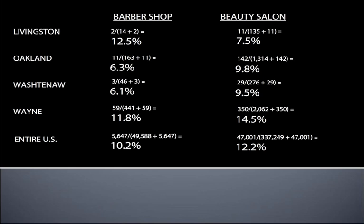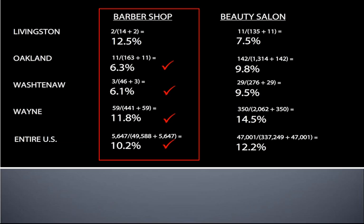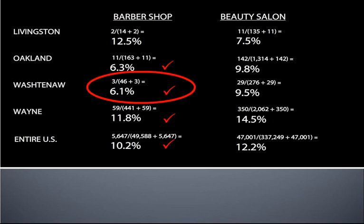Let's take a look at the numbers we have here and place a check mark where the percentages are lower in that particular row, indicating that failures were lower in that type of business than in the other. In nearly all of the counties as well as the entire United States, barbershops have a lower chance of failure — hence a lower risk — than beauty salons. If we were to choose a particular county to open up our barbershop, it makes sense to choose the geography with the lowest failure rate, which would be Washtenaw County, since only 6.1% of the barbershops opened there since the year 2000 went out of business. This is over 4 percentage points lower than the national average of 10.2%. If we were still set on opening up a beauty salon, our best choice would be Livingston County, in which only 7.5% of beauty salons failed — even lower than the percentage of barbershop failures in some areas.